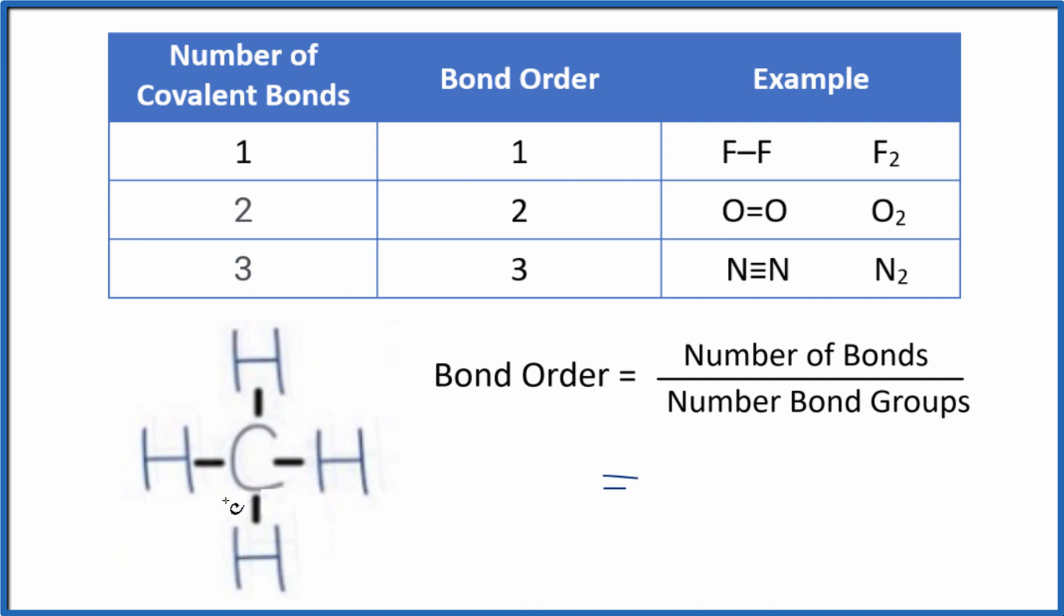Number of bonds, one, two, three, four, and number of bond groups. Those are the hydrogens, two, three, four. Four over four, that equals one, which isn't surprising because we're just averaging the bonds here. So the bond order for the entire methane molecule is one.